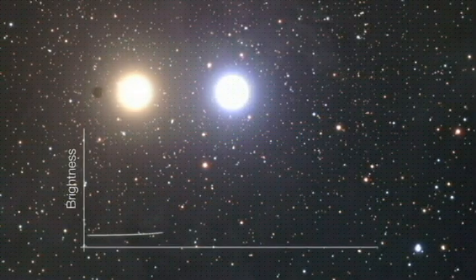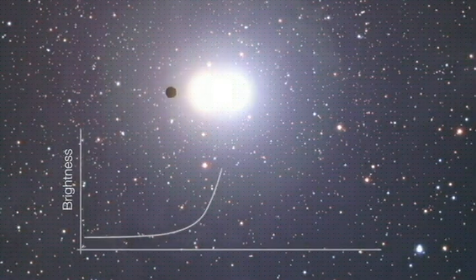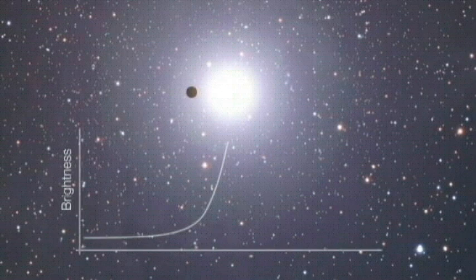The Gravitational Microlensing Method. When one celestial object passes in front of another from our point of view, the closer object's gravity can bend and magnify the light of a more distant object, causing the distant object to appear brighter than normal for a short period of time. This is gravitational microlensing.